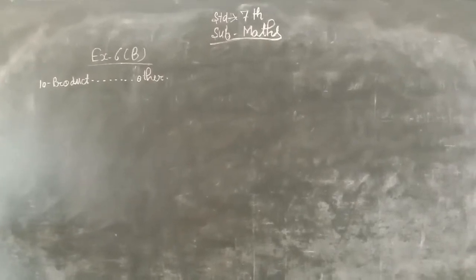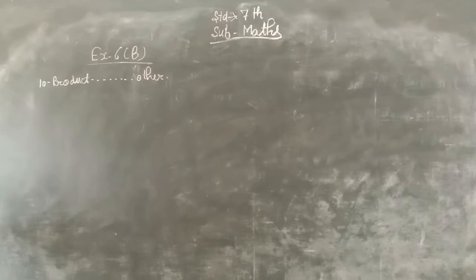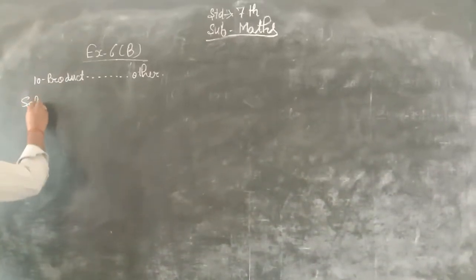Product of two rational numbers is 15. If one of them is minus 2 upon 3, find the other.